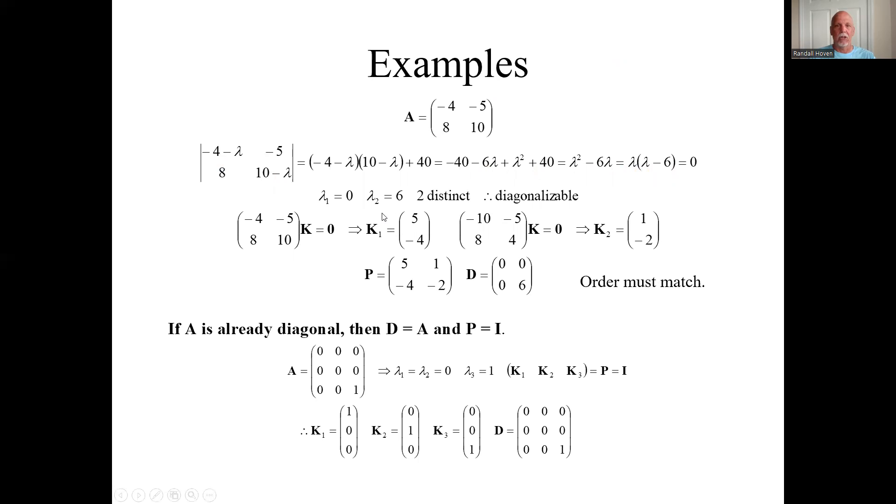Eigenvalues are 0 and 6. They are distinct. So we know right there it's going to be diagonalizable. Go through the work of finding the eigenvectors and we get this 5 minus 4 and 1 minus 2. How to go about this are in previous videos and I'm not going to repeat that kind of stuff. So I found the eigenvalues and the eigenvectors. I know A is diagonalizable.